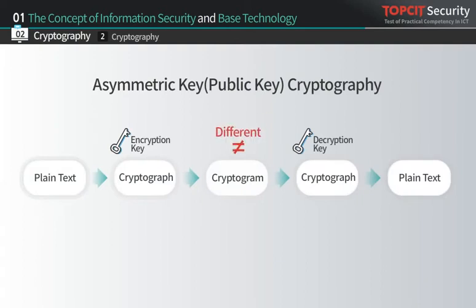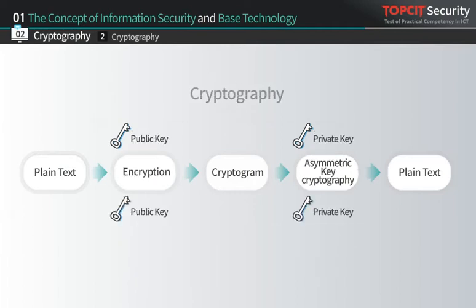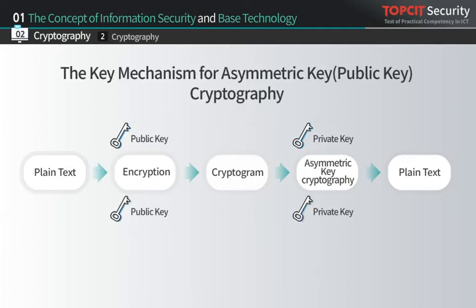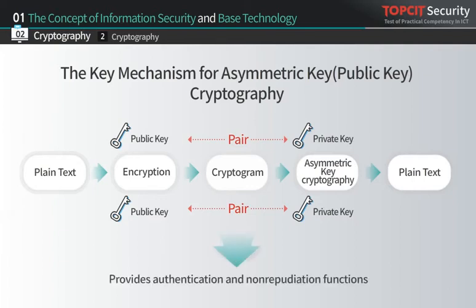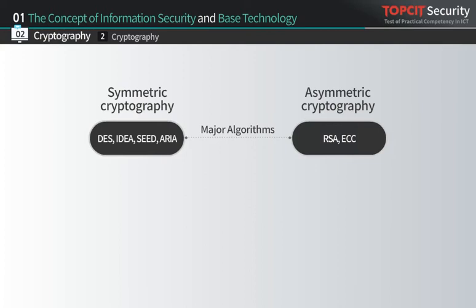This algorithm was first designed by Diffie and Hellman to solve the problem of safe key distribution. The keys used in asymmetric key cryptography consist of two pairs of public keys and private keys, with a mechanism operating in reverse relations. Through this key mechanism, the asymmetric key cryptography algorithm also provides additional services such as authentication and non-repudiation.